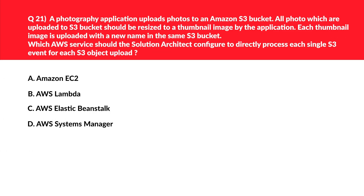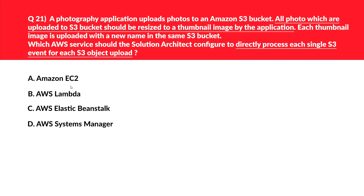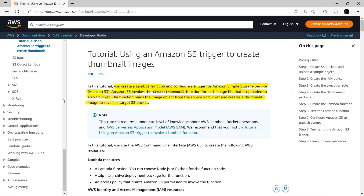We have a very interesting question — let's first mark the keyword. In order to automatically resize a thumbnail image, the application needs a serverless architecture. Scanning through the options, option B strikes our mind because Lambda is definitely a serverless architecture, so we'll keep option B and reject the rest. Looking at the official documentation regarding thumbnail images, there's an entire documentation on it.